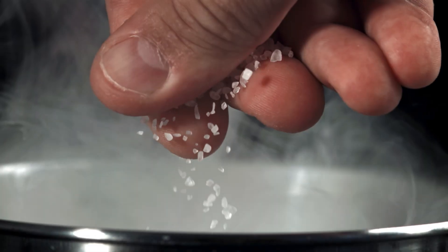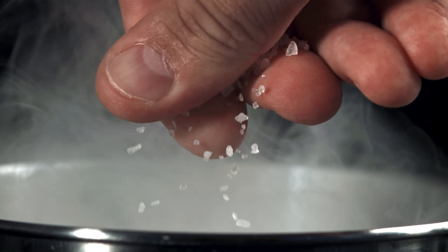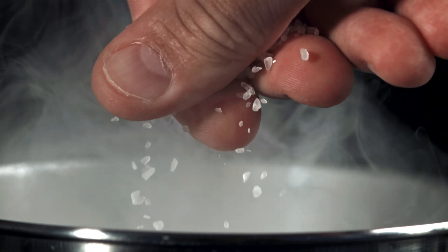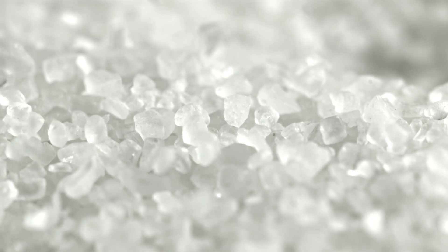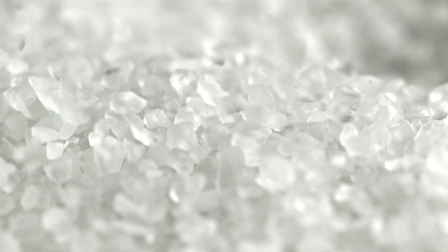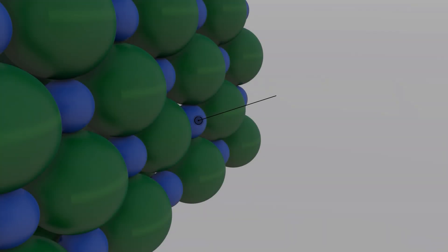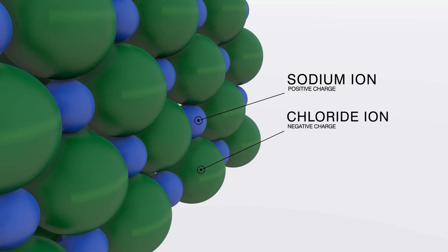For example, when sodium chloride, which is commonly known as table salt, comes into contact with water, a process called dissociation occurs. The chemical elements in table salt are shaped together in a crystal lattice structure held together by ionic bonds. These elements are sodium, which is positively charged, and chloride, which is negatively charged.